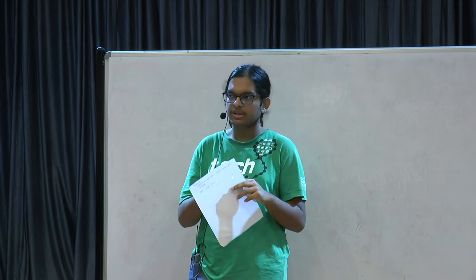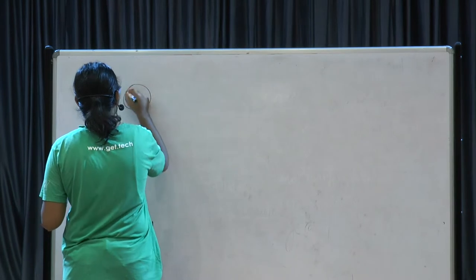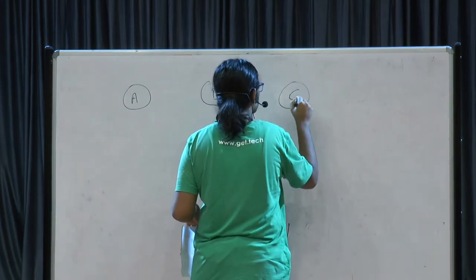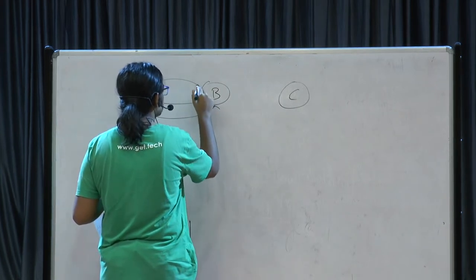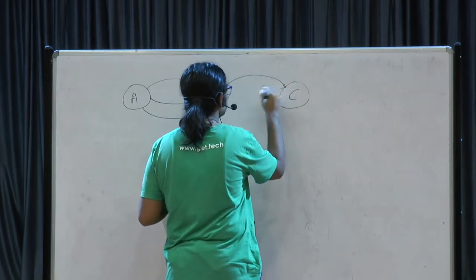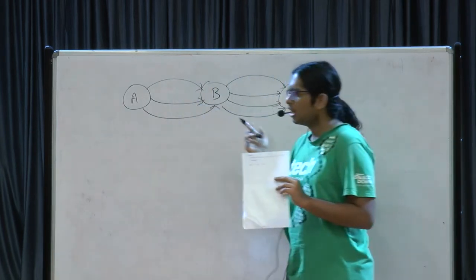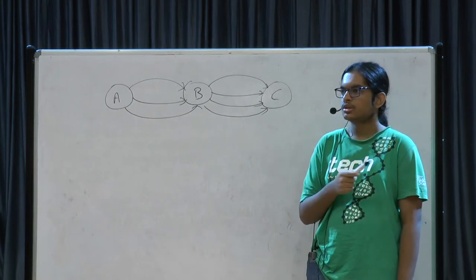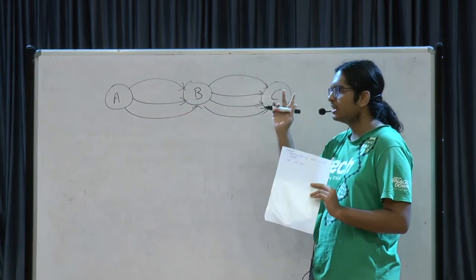First we'll see some simple examples of counting. Let us say we have a bus station named A and another one named B and one more named C. We have three paths to go from A to B — that is three routes — and four from B to C. So how many ways are there to go from A to C? The answer is 12. So does everybody see why it is 12? We are just multiplying them because these are two independent events in series.